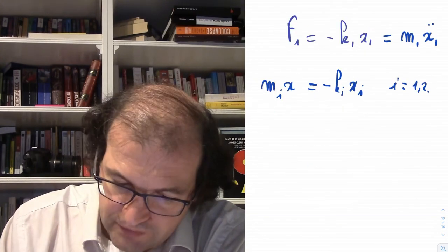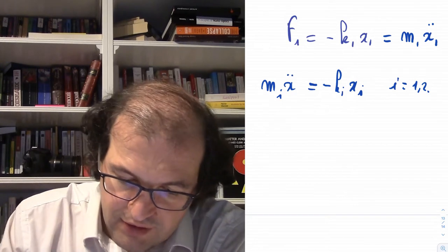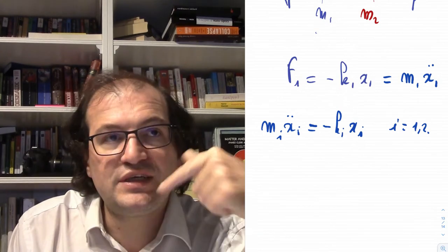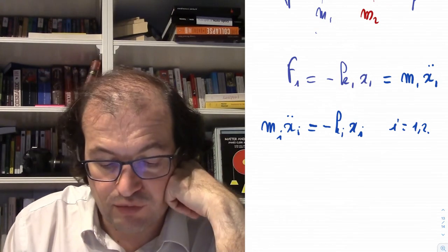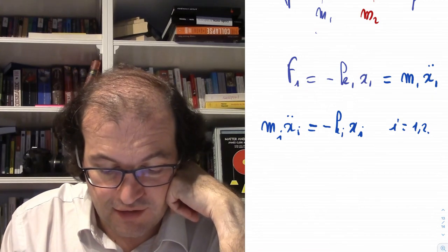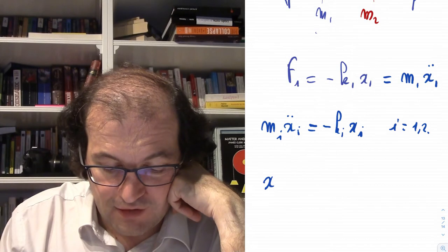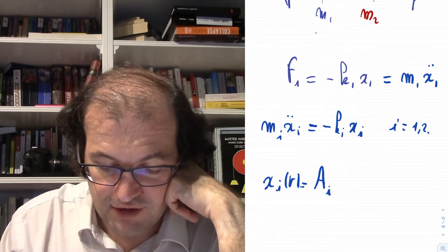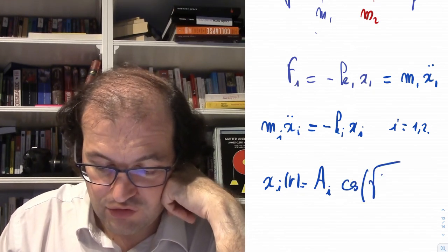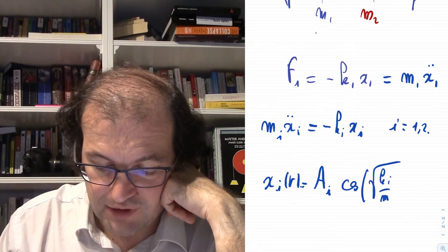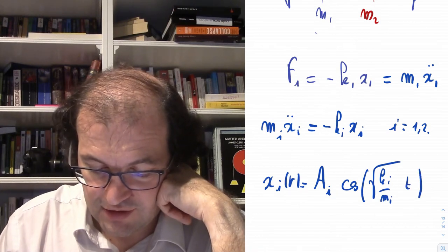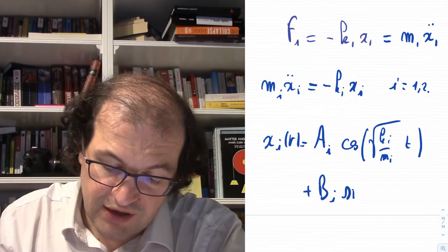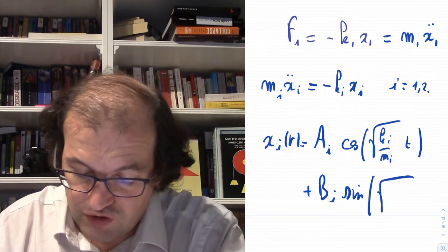This we can solve. The solution for an oscillator is xᵢ(t) = Aᵢ·cos(√(Kᵢ/Mᵢ)·t) + Bᵢ·sin(√(Kᵢ/Mᵢ)·t). Taking two derivatives extracts Kᵢ/Mᵢ from the cosine or sine, giving back the original function with the correct sign. Before coupling, each oscillator oscillates freely with its natural frequency.